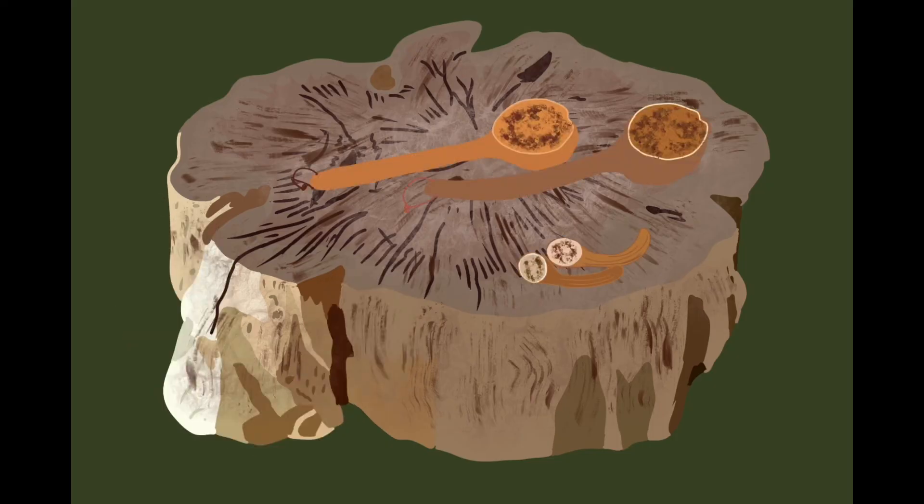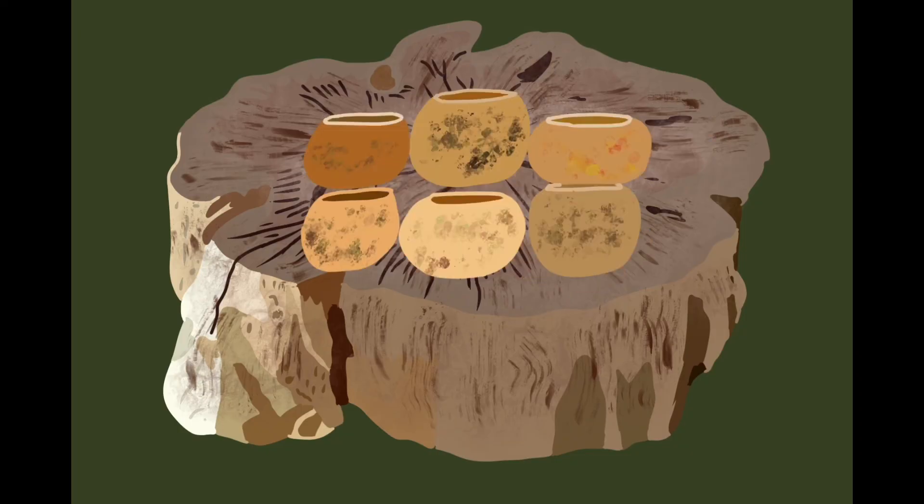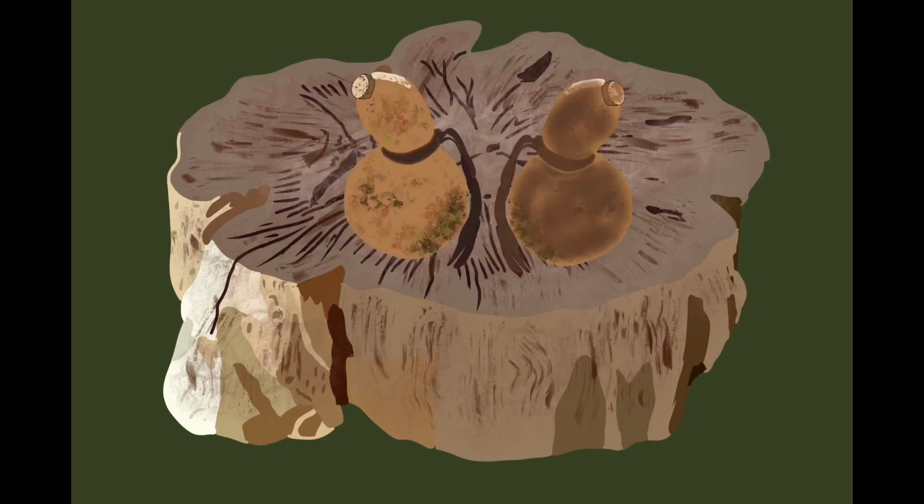Some squash, called gourds, are not for eating. They are useful, too. When they are dried, gourds have a hard outer skin and can be used for items like cups, bowls, spoons, containers for water, drums, rattles, and even storage of seeds for the next planting season.